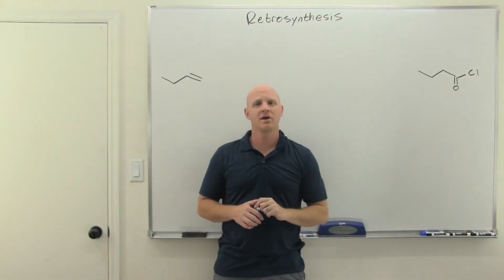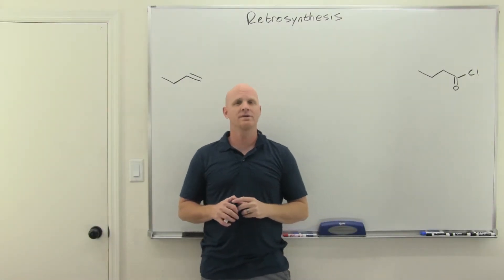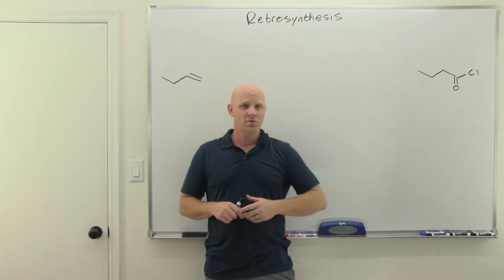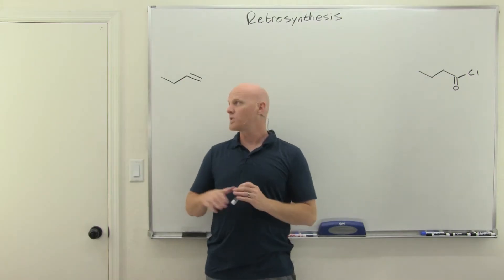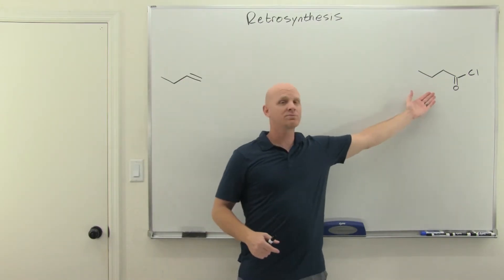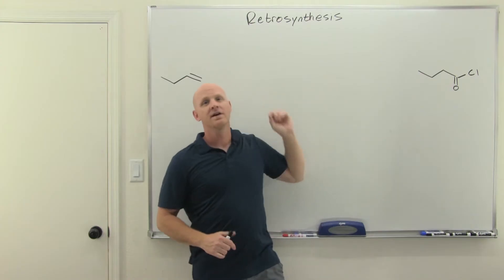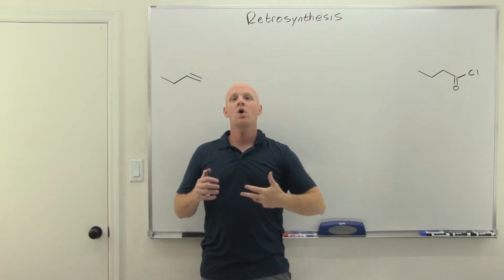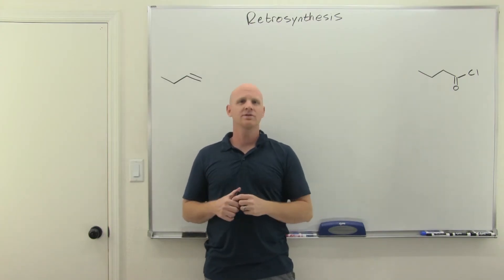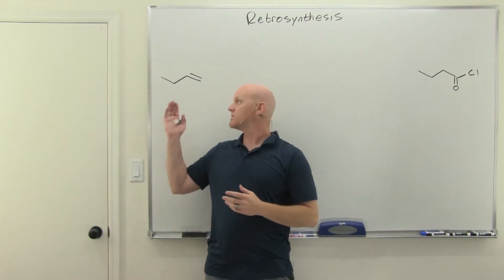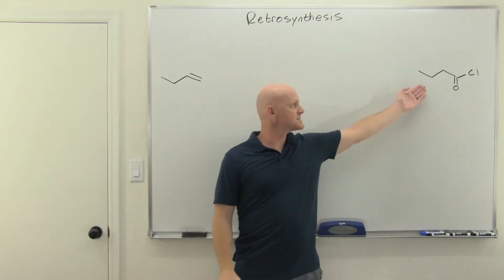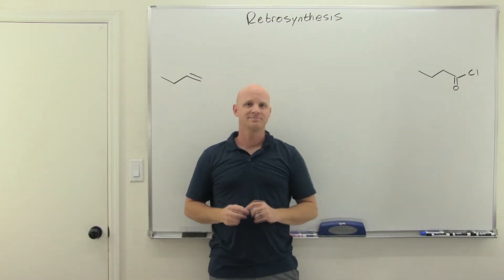Retrosynthesis with carboxylic acids and carboxylic acid derivatives. We're going to do four example retrosynthesis problems where I give you an initial reactant and a final product, and we're going to work them backwards to figure out all the reagents necessary and all the intermediates along the way to turn the initial reactant into the final product.